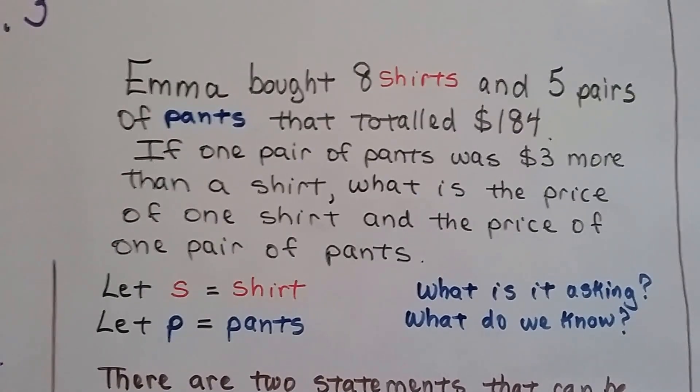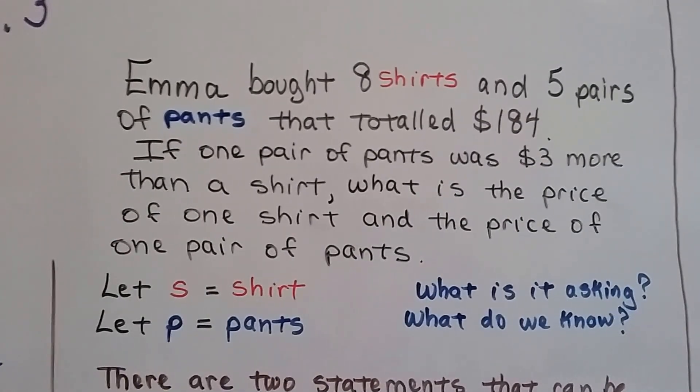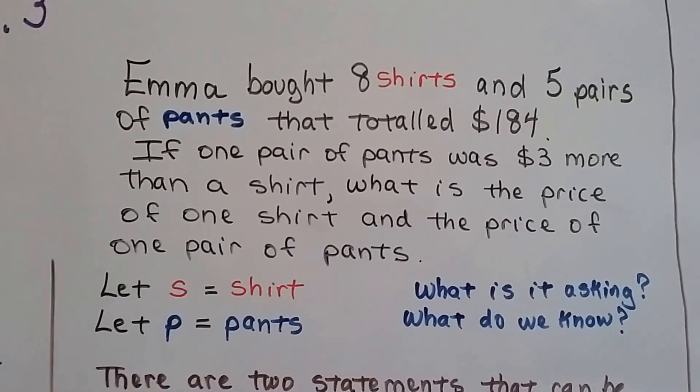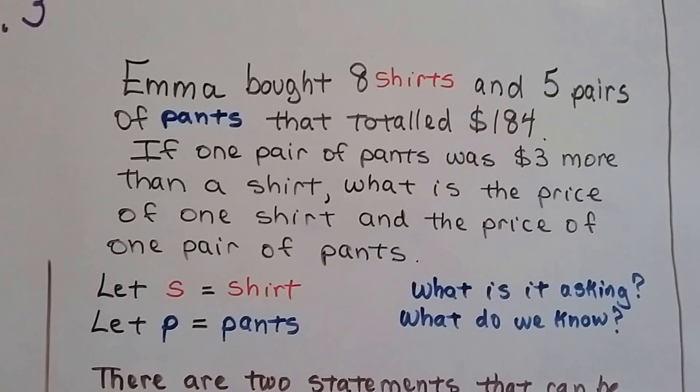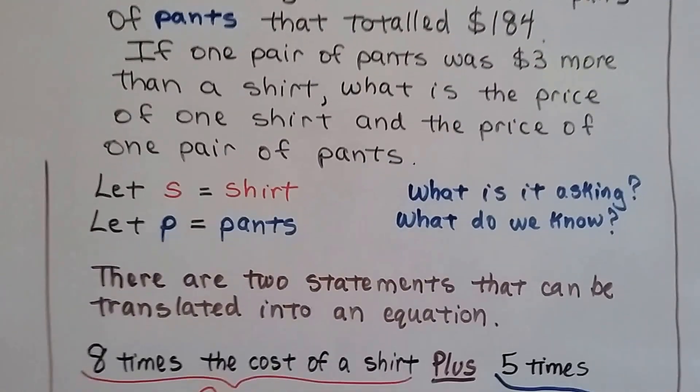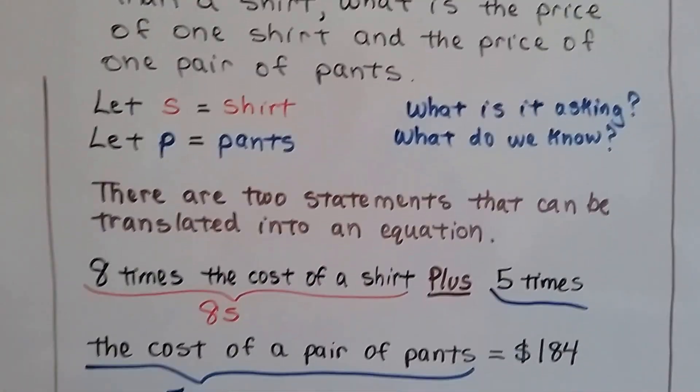It's asking how much the cost of one shirt is and how much the cost of one pair of pants is. What do we know? We know that eight shirts and five pairs of pants together is $184. We also know that the cost of a pair of pants is $3 more than the cost of a shirt.